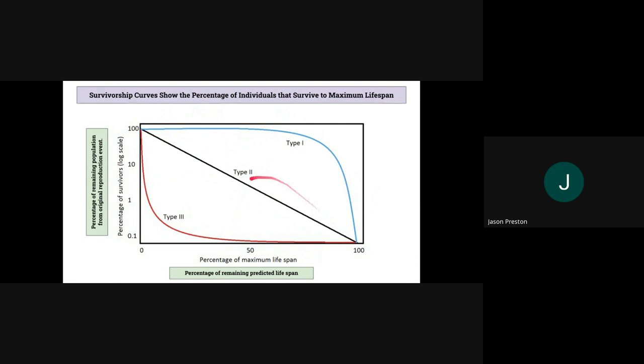And then you have Type 2 organisms, which are a combination of both. They're just as likely to die young as they are old because they have consistent selective pressures throughout their life. A good example of Type 2 might be like rodents. Rodents are just as likely to die young as they are old. Birds are pretty much Type 2 as well.